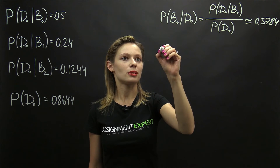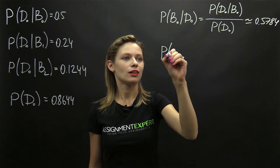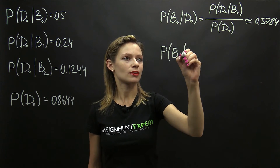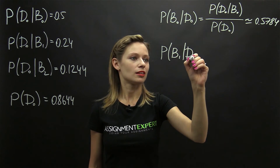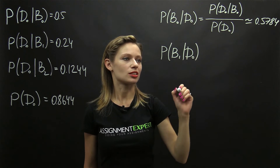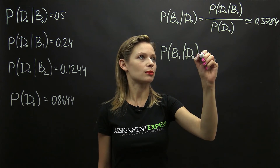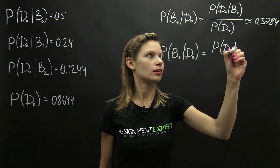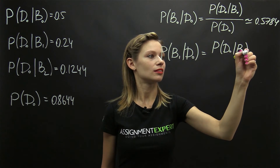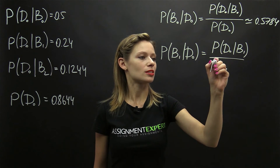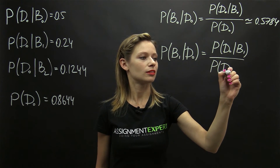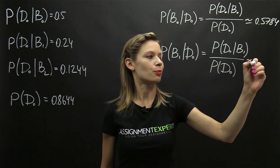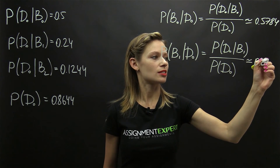Then the probability of selecting the batch with one defective component, given that neither of the selected components was defective, is equal to the probability of D0 given B1, over the probability of D0, and that is approximately equal to 0.2776.